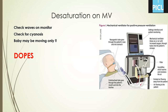If we have desaturation on mechanical ventilation, first ensure it's true desaturation. Check the waves on the monitor — as we said, they should be regular and the patient should not be moving. Check the patient for cyanosis. If the patient has progressive desaturation, you should be logical. Think starting from the ventilator, connections, possible problem with the endotracheal tube, patient airway, and patient lung or pleura.